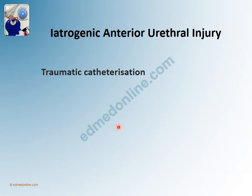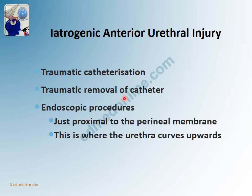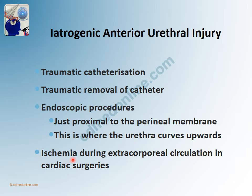Iatrogenic urethral injury is, in fact, probably the commonest reason why a urethra is injured. Traumatic catheterization done in an improper way is likely the most common cause. Viewers are encouraged to look at our video on proper urethral catheterization. Traumatic removal of a catheter and endoscopic procedures also cause injury, as they involve insertion of a rigid instrument into the urethra. The injury most likely occurs just proximal to the perineal membrane, where the urethra curves upward, and undue pressure may injure the urethral epithelium at this level.